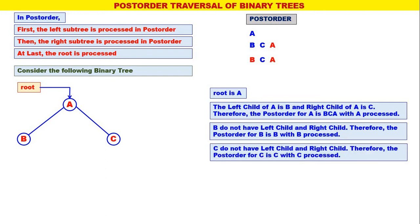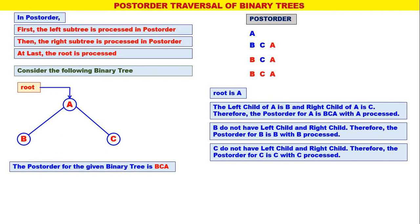C does not have a left child or right child. Therefore, the post-order for C is C only, with C processed. Now you can observe all the nodes are red, meaning all the nodes are traversed. Therefore, the post-order traversal for this tree is B, C, A. I think it is quite simple.